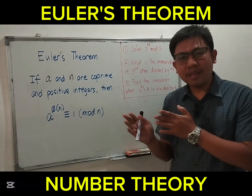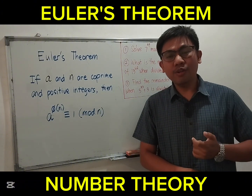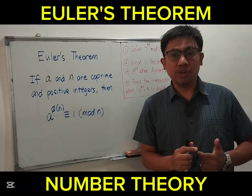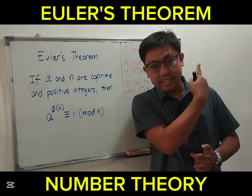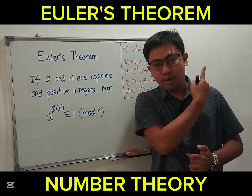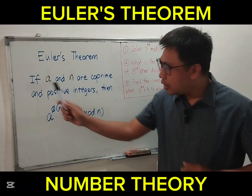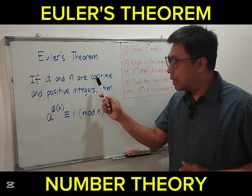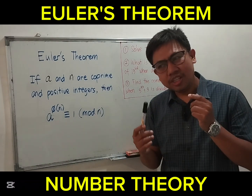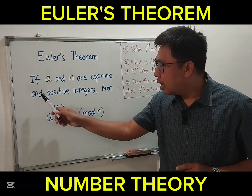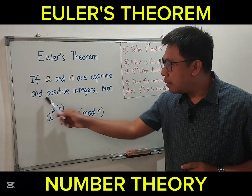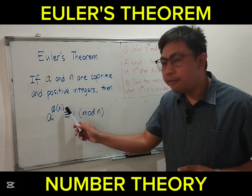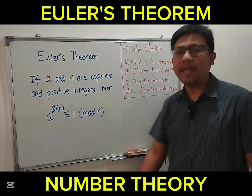So before this topic, you should have prior knowledge about Euler's totient function. So for the definition: if A and N are co-prime — meaning relatively prime, so the GCD of the two numbers must be 1 — and positive integers, then A to the phi of N is congruent to 1 modulo N.